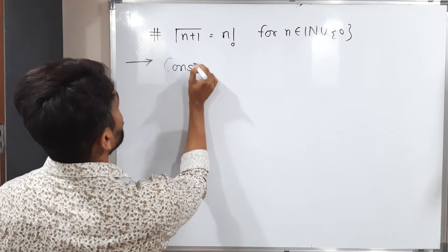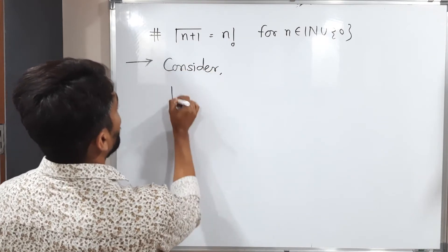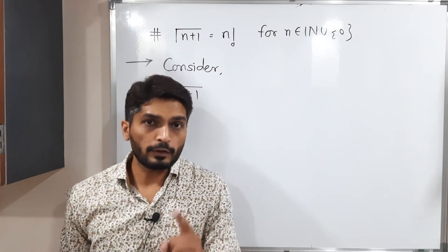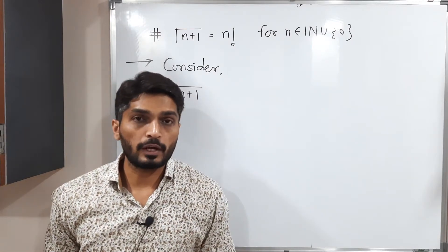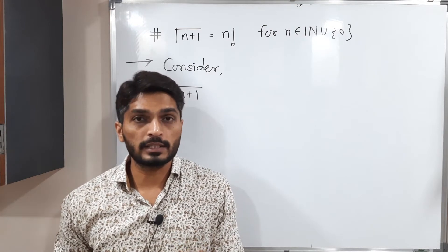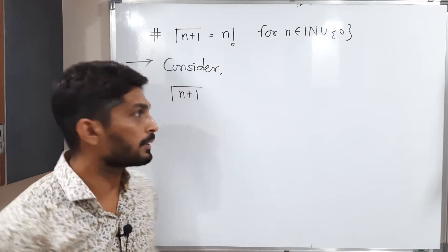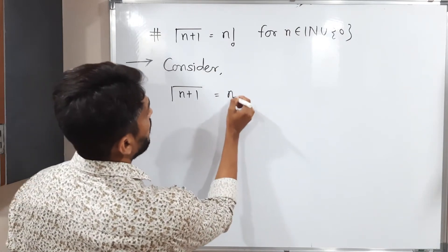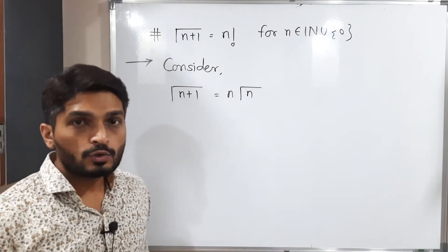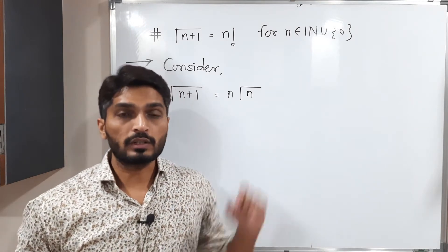Consider γ(n+1). One property of the gamma function we already discussed in our previous videos is that γ(n+1) = n·γ(n). Let us use that property, so we have n·γ(n).